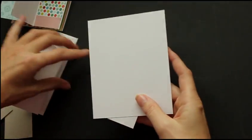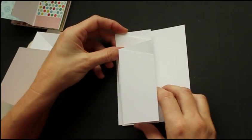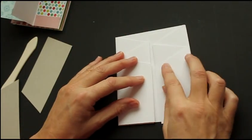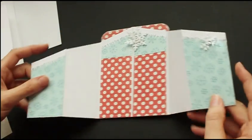Then you take a piece of 4¼ by 5½, and you adhere your sides on here. Now we have something that looks like this.